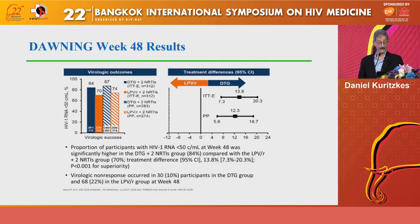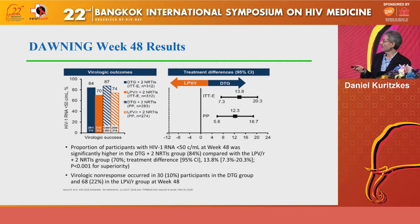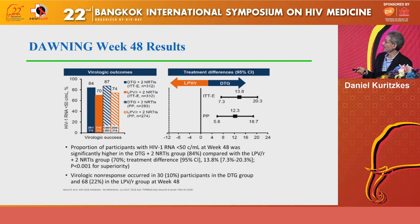The primary endpoint was achieving viral suppression to less than 50 copies per mL at week 48 using the FDA snapshot analysis. The study showed that dolutegravir outperformed boosted lopinavir by a wide margin, not only achieving non-inferiority but actually demonstrating superiority.